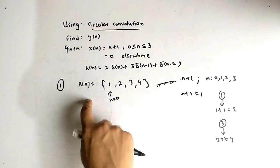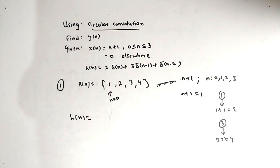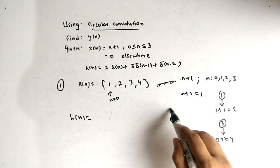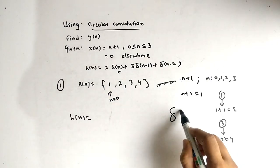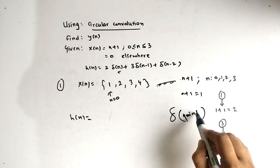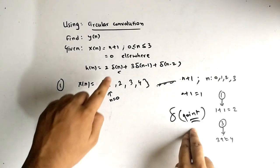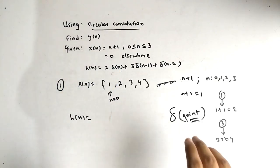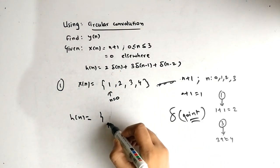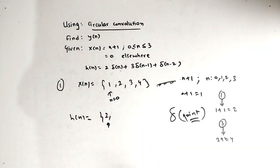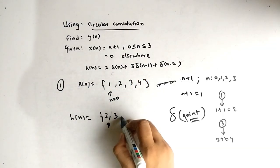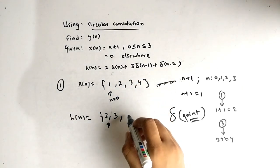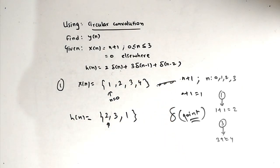Now for the impulse response h(n): delta indicates the signal is valid at a particular point — whichever point is in the bracket. The first term is delta(n), so at n=0 the amplitude is 2. At n=1 amplitude is 3. At n=2 amplitude is 1. So h(n) = [2, 3, 1].